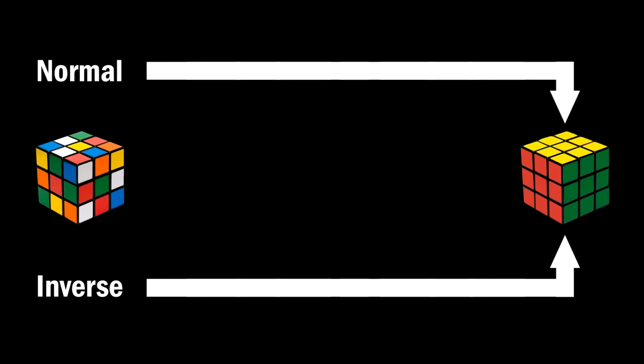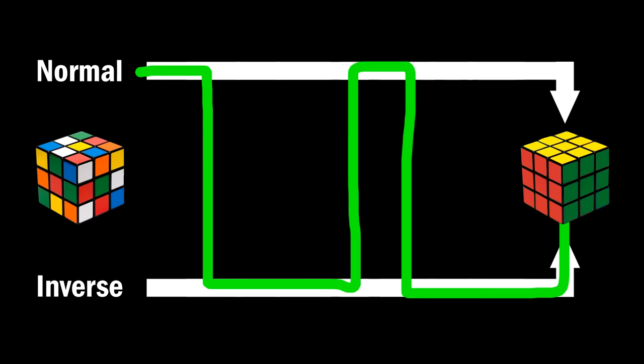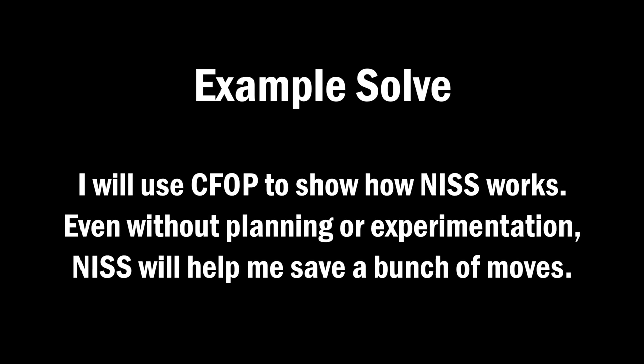So now when you get a scramble, you actually have two scrambles to try, which is more chances to get better cases. But switching scrambles can be done more than once, not just at the beginning. You can actually switch after completing any step, and this is called NIS. The rules are in the description just for reference, and it'll make sense once you see this example.